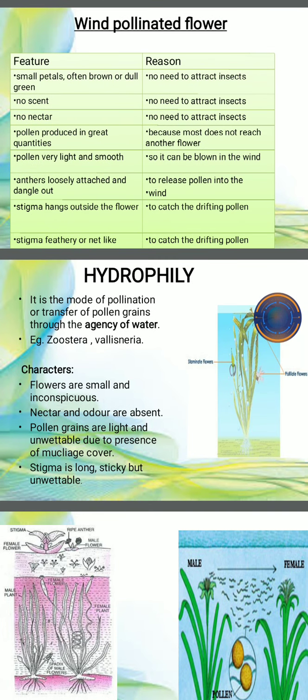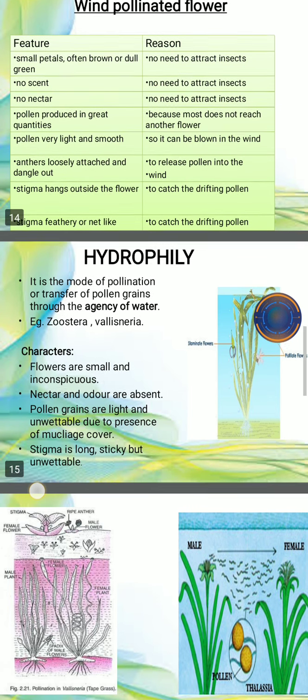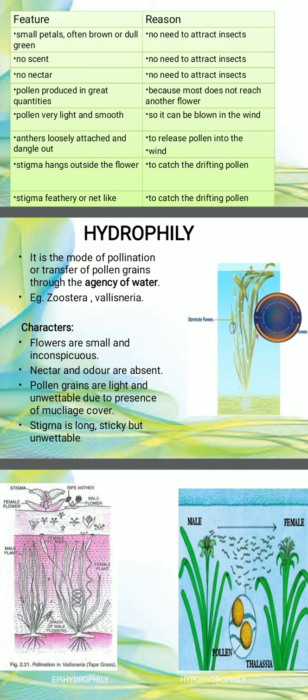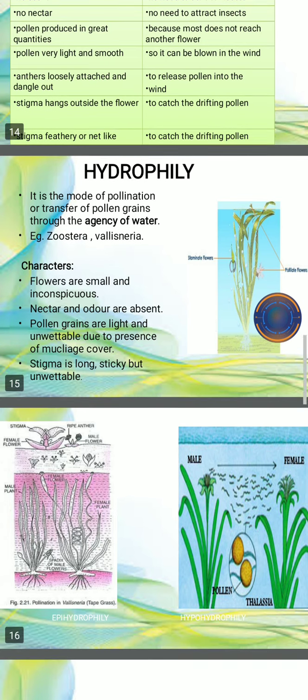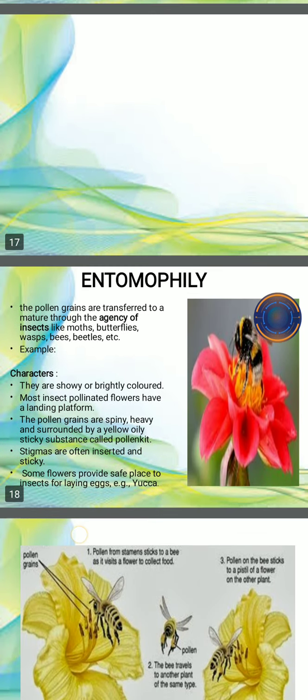Next is hydrophily — the mode of pollination or transfer of pollen grains with the help of water. These are the waterborne plants, for example Zostera, Vallisneria, and Ceratophyllum. In all these flowers, pollination occurs with the help of water. The different characters of hydrophilous flowers are that flowers are small and inconspicuous, nectar and odors are absent, pollen grains are light and unwettable due to the presence of a mucilage cover, and the stigma is long and sticky but unwettable.